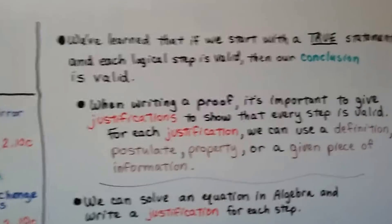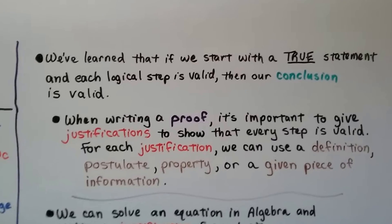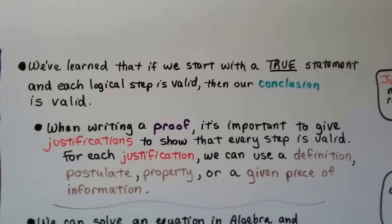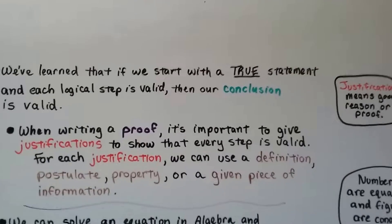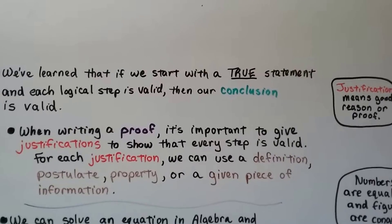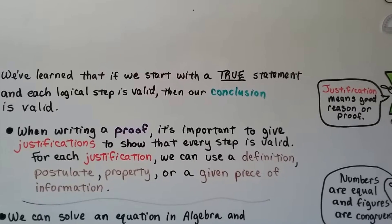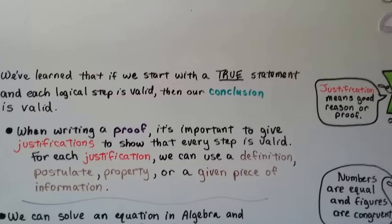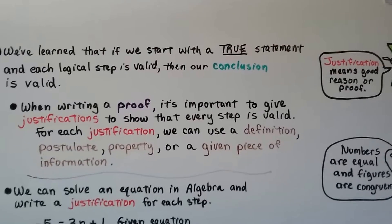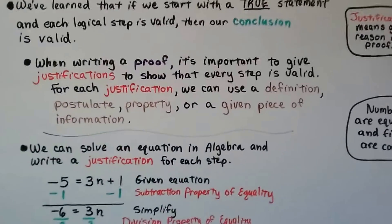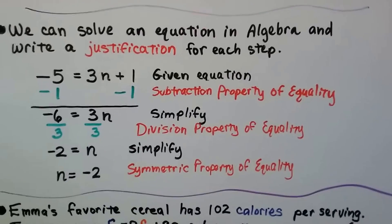We've learned that if we start with a true statement and each logical step is valid, then our conclusion is valid. When writing a proof, it's important to give justifications to show that every step is valid. For each justification, we can use a definition, a postulate, a property, or a given piece of information. A justification means a good reason or proof.